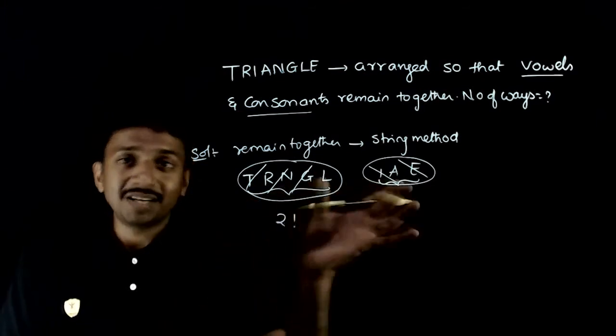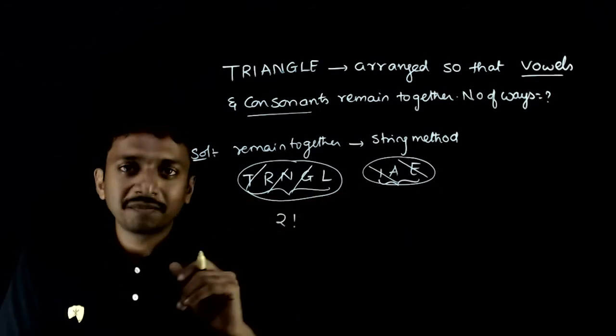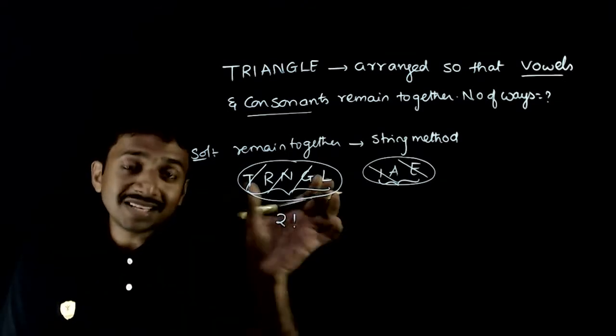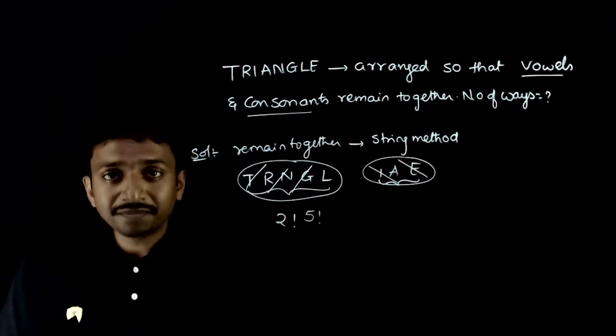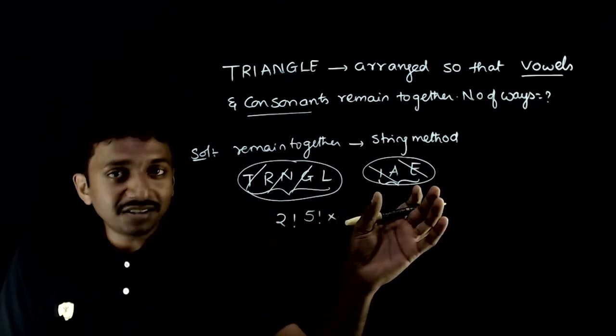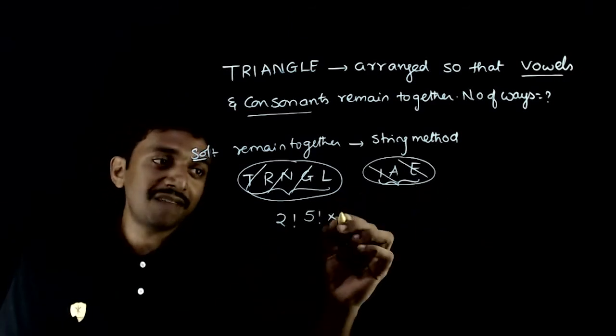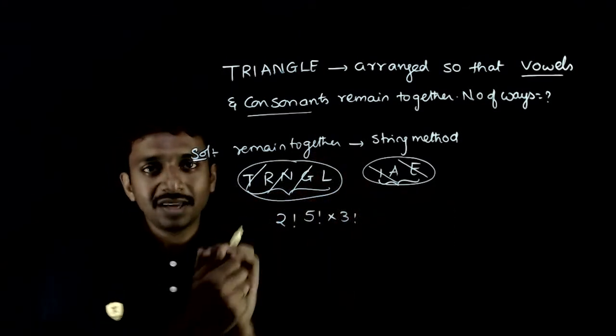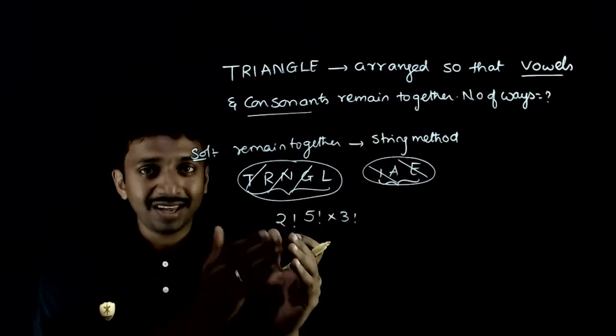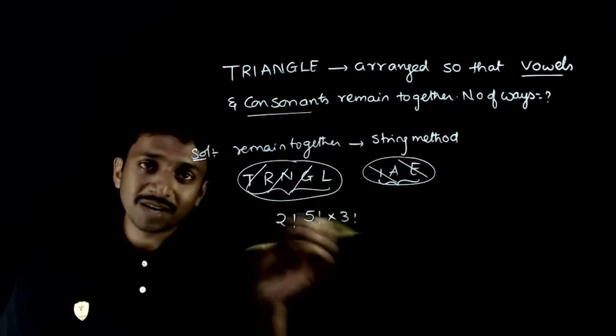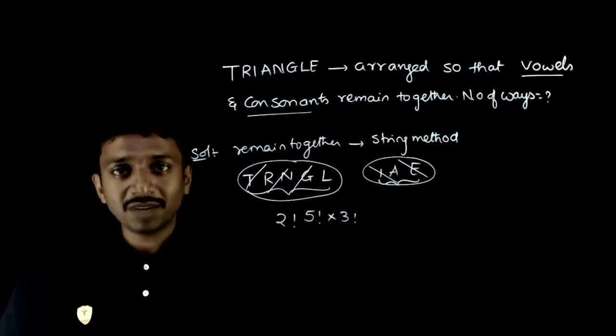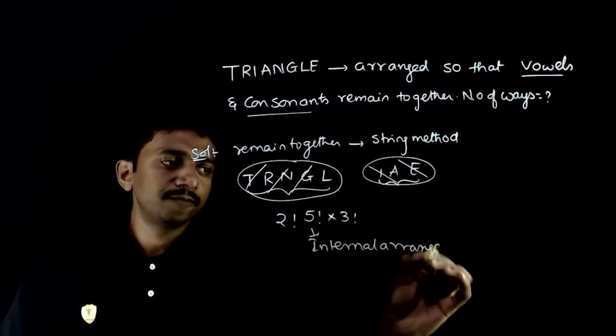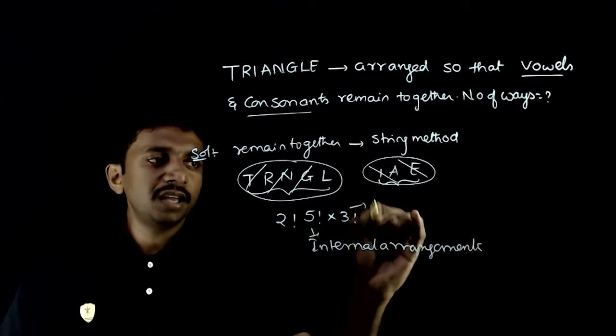Now it will be internal arrangements. In these 5 letters, how can they change orders? 5 factorial ways. In these 3 letters, how can I change orders? 3 factorial ways. So in 2 factorial ways I can change these whole entities, and within the entity 5 letters can arrange in 5 factorial ways and 3 letters in 3 factorial ways. These are called internal arrangements.